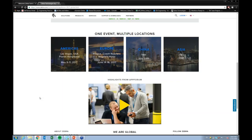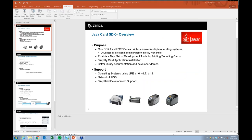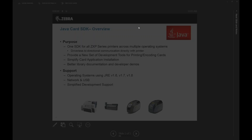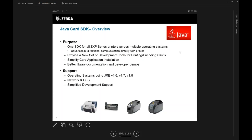Thanks again for joining us. I'm going to turn this over to Crystal Spaeth. So I'm going to briefly go over the new Java Card SDK, its purpose and some of the key features, and how it compares to the current SDKs for our ZXP card printers. Right now we have two C-Sharp SDKs: one for the ZXP 1 and 3, and the Z-Motif SDK for the ZXP 7 and 8. One purpose of the Java Card SDK is to support across all ZXP printers — one SDK, all card printers.